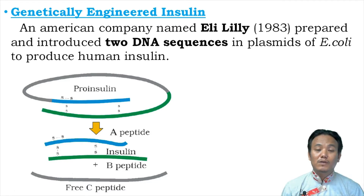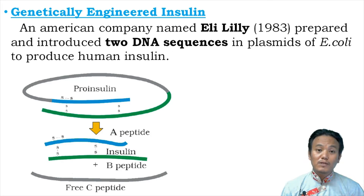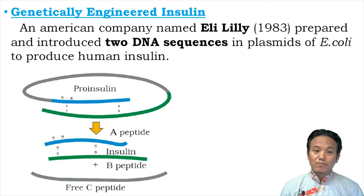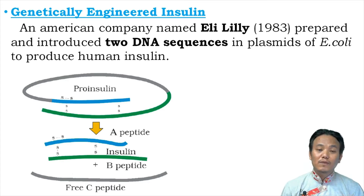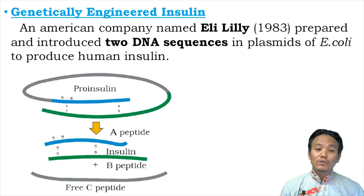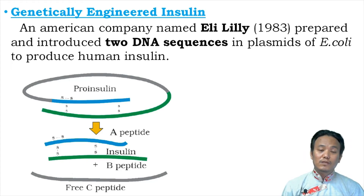The diabetic patient has to obtain insulin from the market, produced by a company. In earlier days, the insulin given to diabetic patients was extracted from slaughtered cattle and pigs. Their pancreas were removed and animal insulin was extracted. Since that is animal insulin and not human insulin, when it is injected into a human diabetic patient, the patient sometimes shows an allergic reaction — the immune system reacts in an undesirable manner.